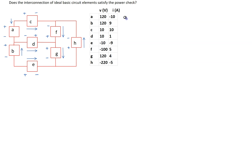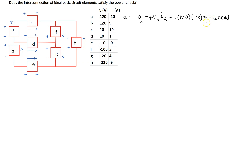First we look at element A. We know that the power is given by the product of the voltage and the current, so P_A = V_A × I_A. Now we need to apply the passive sign convention to determine the sign. For element A, the reference current is entering the terminal marked positive, so we use the power formula with a plus sign. Substituting the values: 120 times minus 10 equals minus 1200 watts. This negative answer means that circuit element A is supplying power.